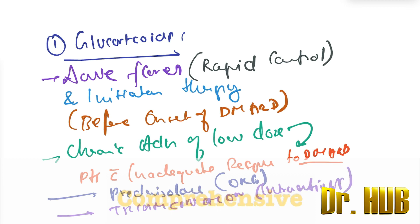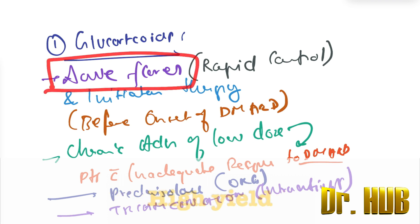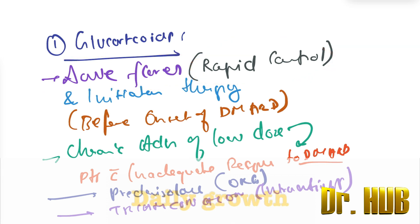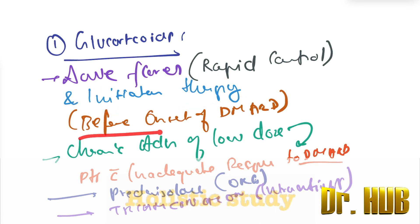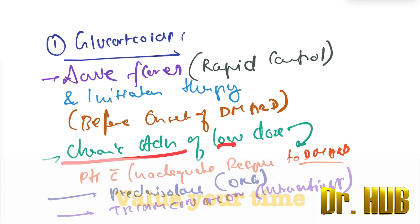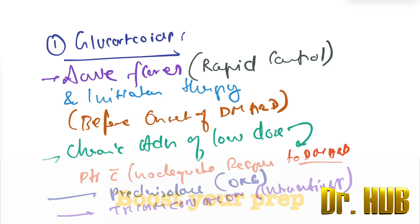Recapping glucocorticoids: they are used in acute flares for rapid control and as initiation therapy before the onset of DMARDs. Chronic administration of low doses is given in patients with inadequate response to DMARDs. Prednisolone is administered orally, and triamcinolone is given intra-articularly.